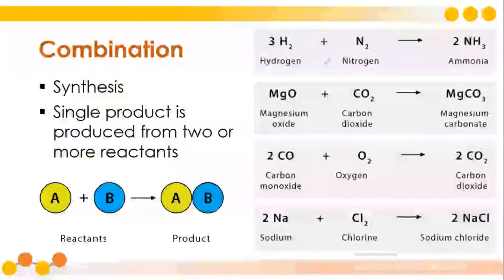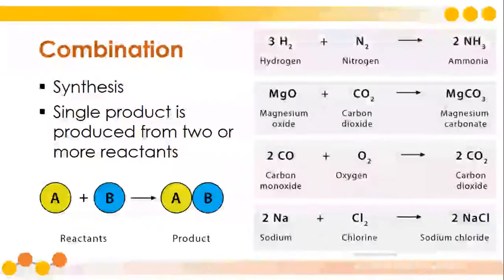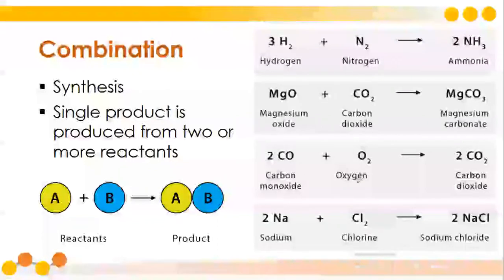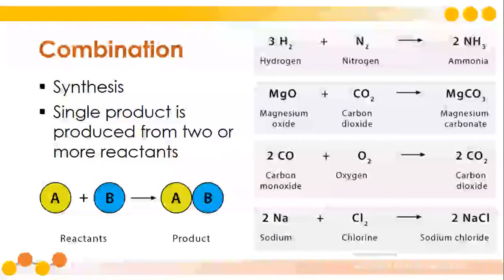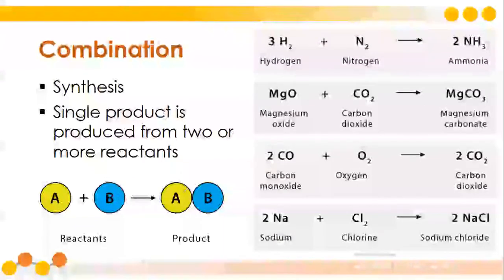Let's take a look at examples. We have hydrogen combined with nitrogen — it will produce ammonia, NH₃, simply a combination of both nitrogen and hydrogen. We have magnesium oxide plus carbon dioxide producing magnesium carbonate. Carbon monoxide plus oxygen will produce carbon dioxide. And sodium plus chlorine will produce sodium chloride, or what we all know as salt. From the name itself, it's a combination of two reactants to produce a product.